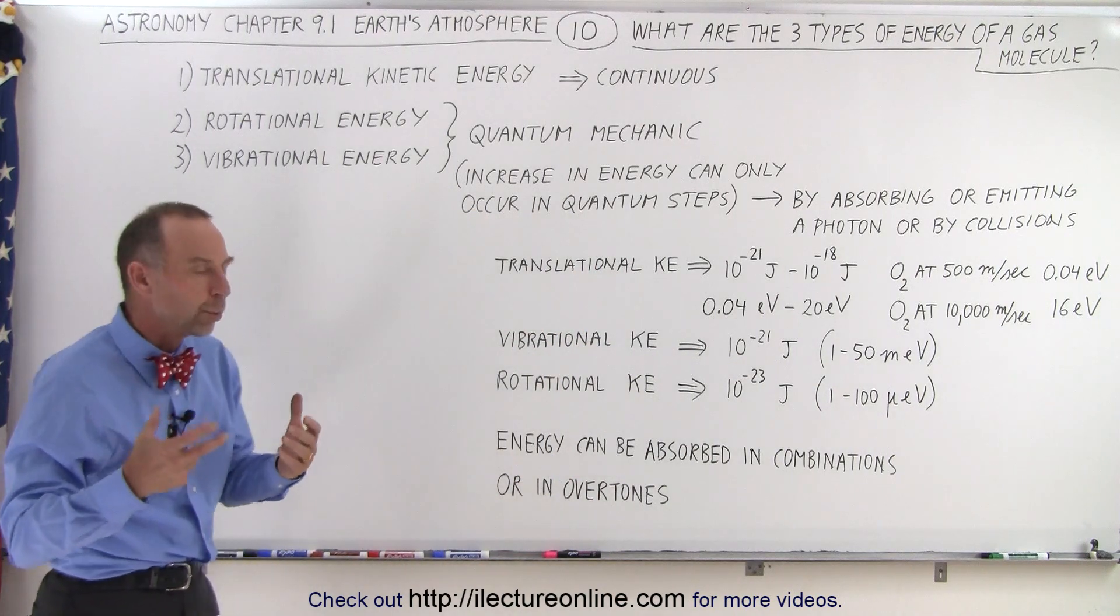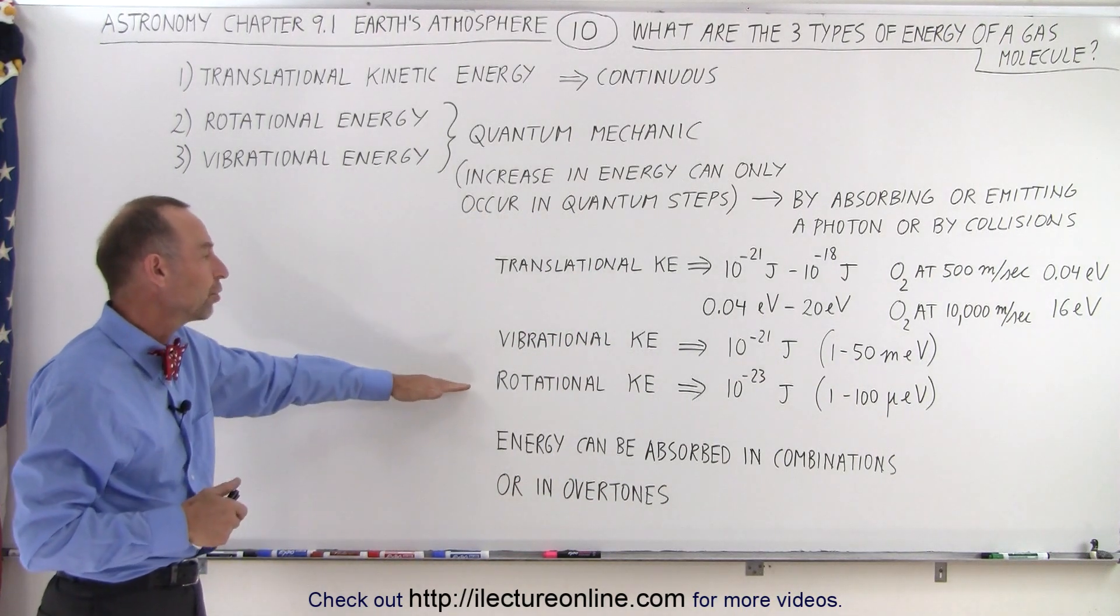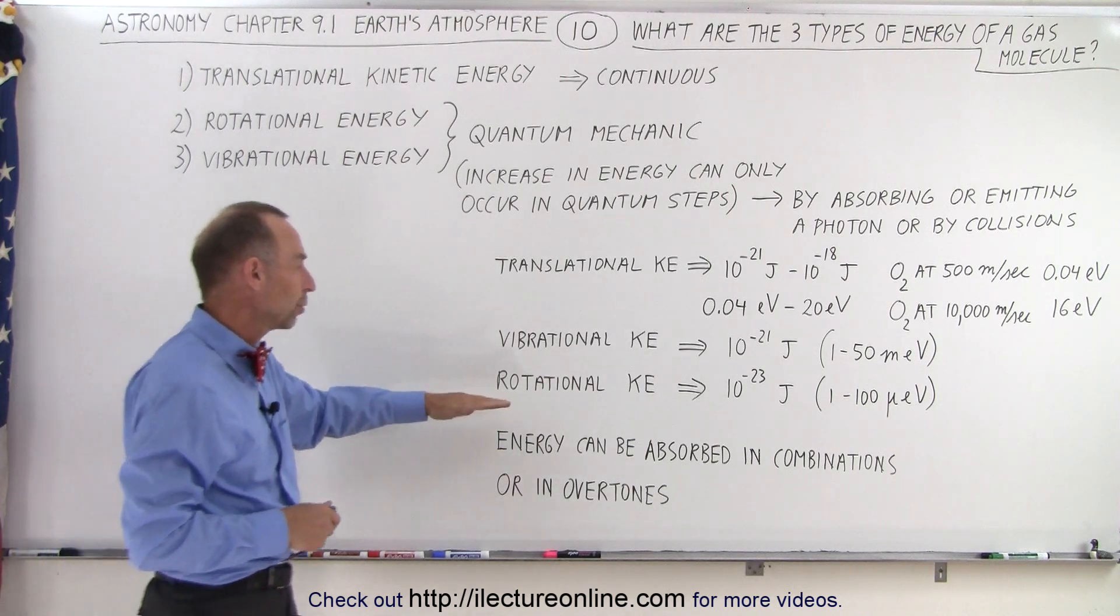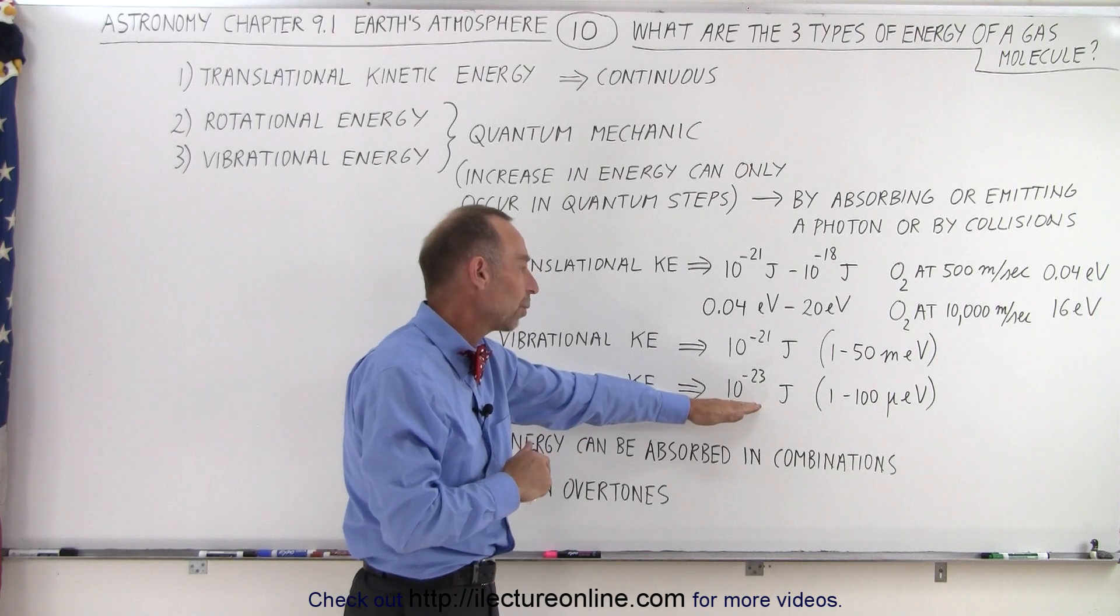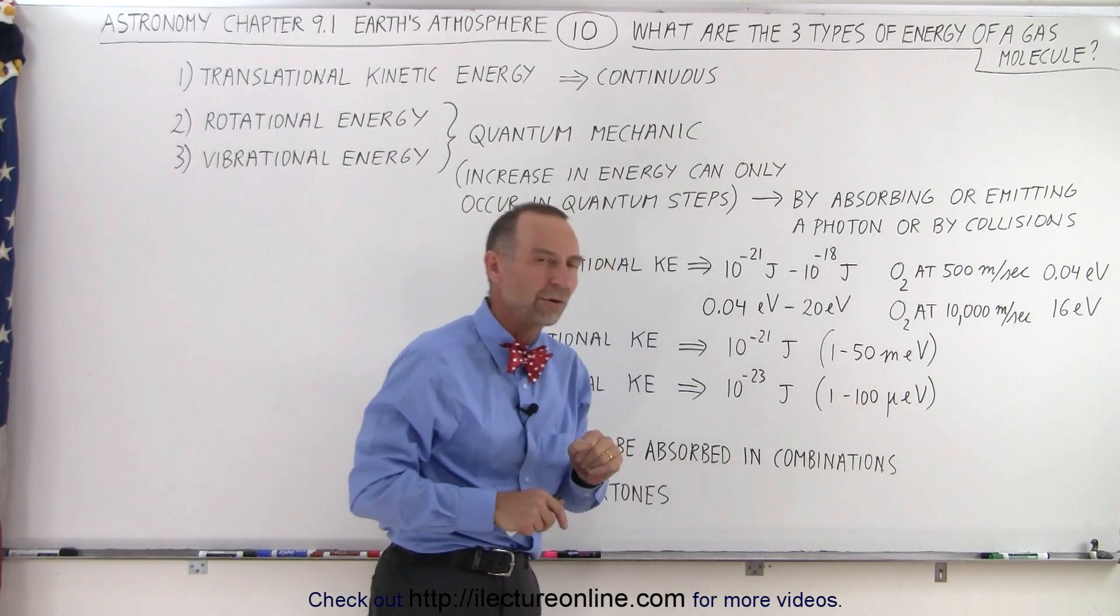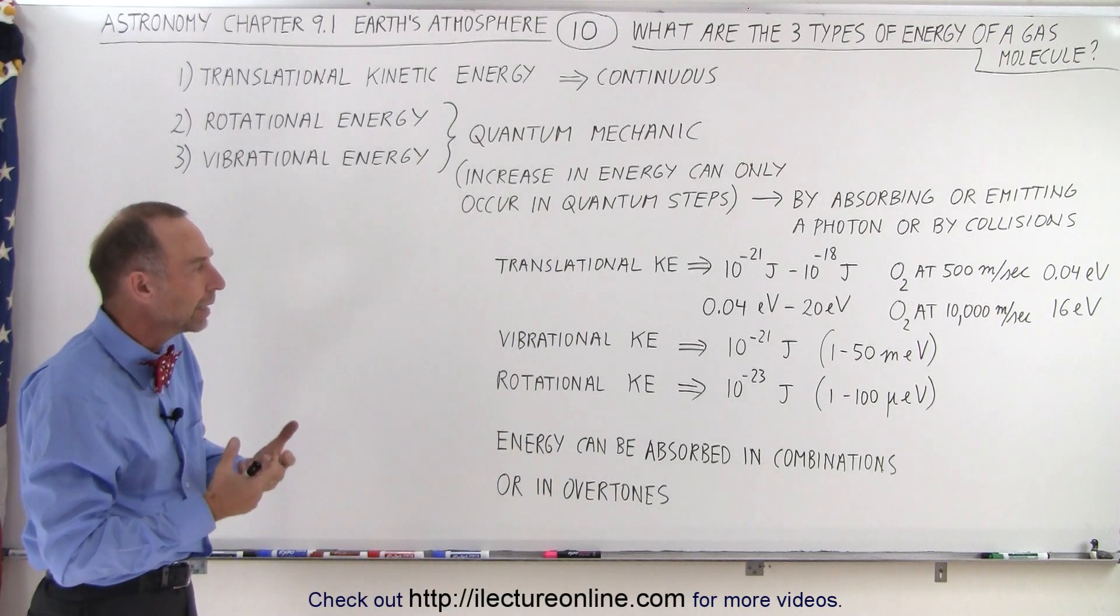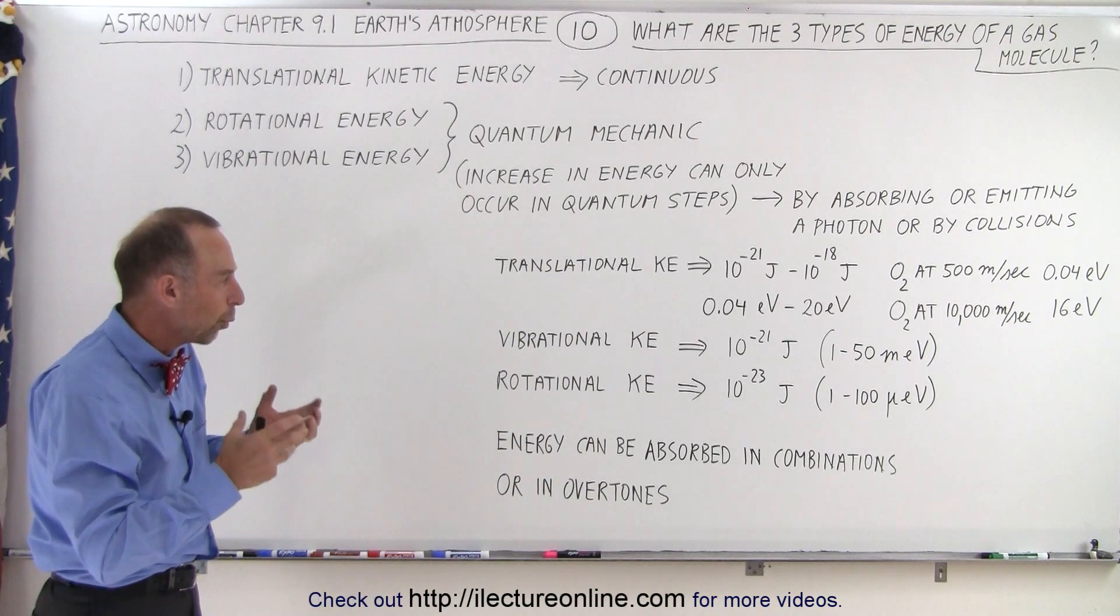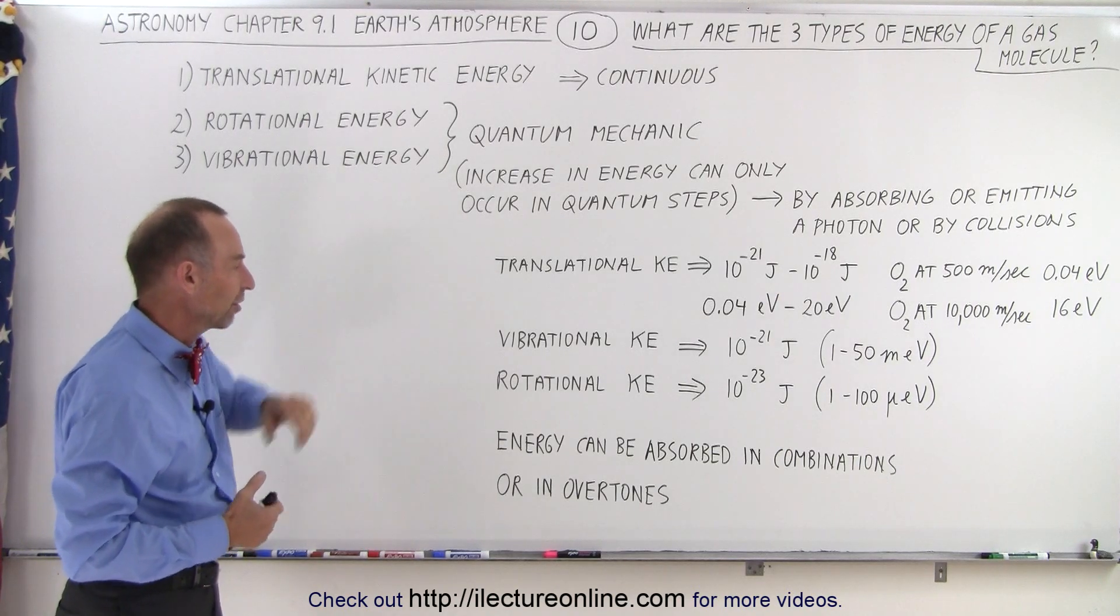And then the mode in which the molecule retains the least amount of energy is the rotational kinetic energy. The rotational kinetic energy is around 10^-23 joules, which varies from about 1 to 100 microelectron volts, so upwards to about a tenth of a millielectron volt. So quite a bit less than the vibrational mode and definitely less than the translational mode.